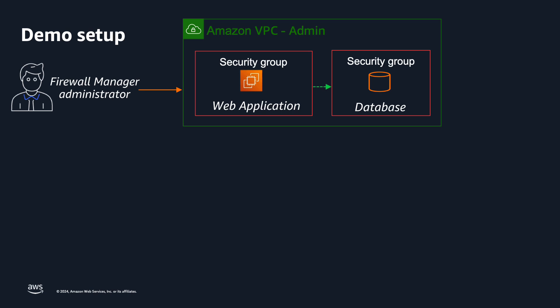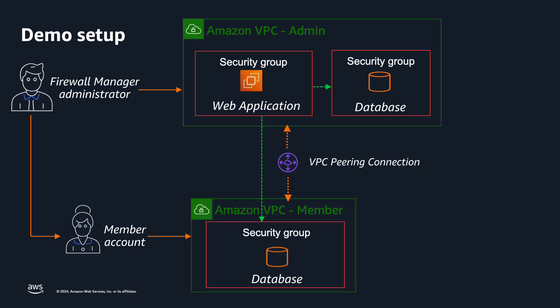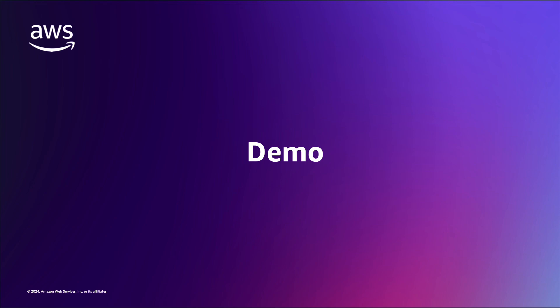For this demo, we have an administrator account that contains a web application with inbound access to a database in the same VPC. The administrator would like to ensure that as they continue to scale the environment, additional member accounts with an established peer VPC connection can receive inbound access from the application in the administrator account. The creation of reference security groups is a manual task that can become tedious as you scale your environment. With Firewall Manager, you can create security group common policies that will distribute security group references from the primary security group to the security groups created by the policy, allowing you to automatically scale reference security groups based on the desired requirements.